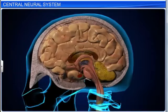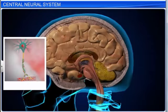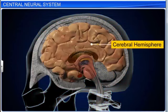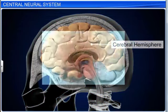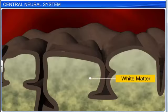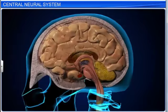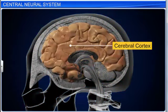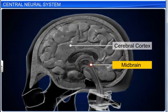Due to the presence of myelinated axons, the inner part of the cerebral hemisphere appears white and is thus called white matter. The thalamus is located between the cerebral cortex and midbrain, and acts as a major coordinating center for sensory and motor signaling.